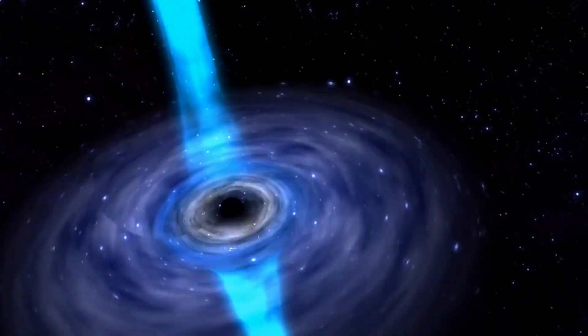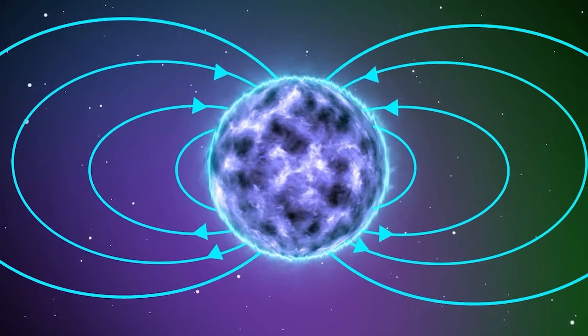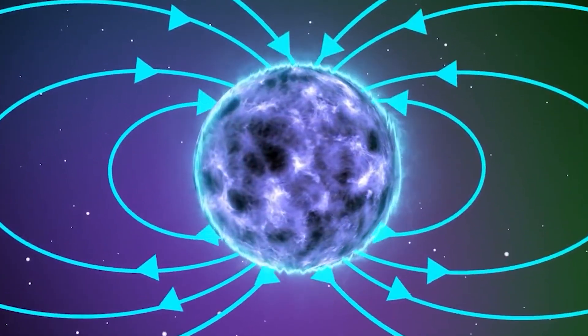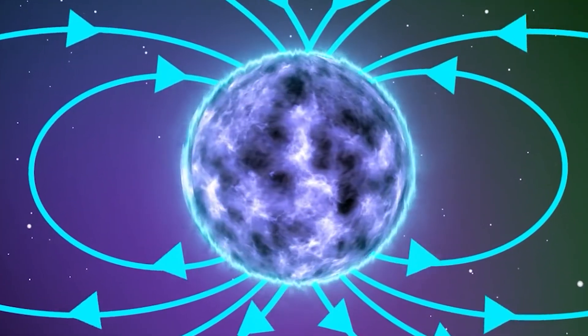Additionally, the gravitational field of neutron stars warps time and light, causing time to pass more slowly on a neutron star compared to Earth.